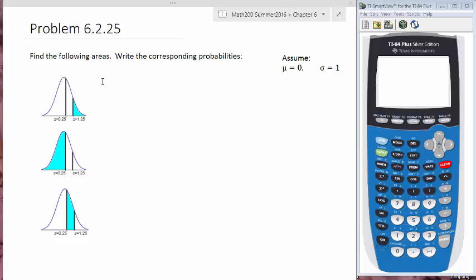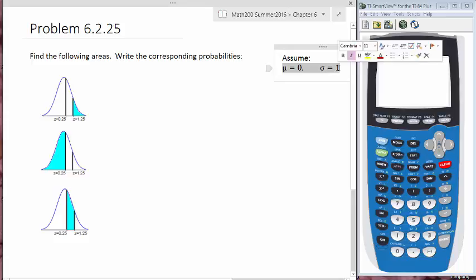So this is a normal distribution, and in this particular case, we're looking for z-values. Whenever we deal with z-values, we assume that our mean is equal to 0 and our standard deviation is equal to 1. This would then be called a standard normal distribution.